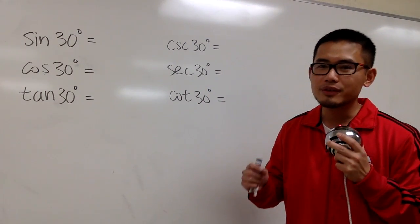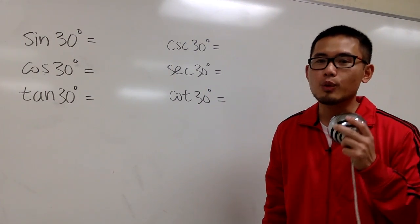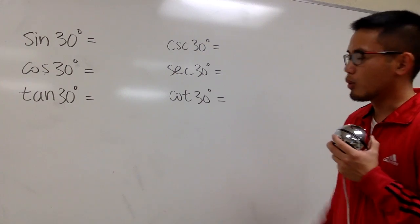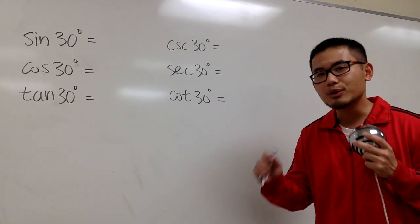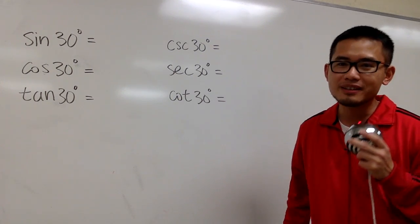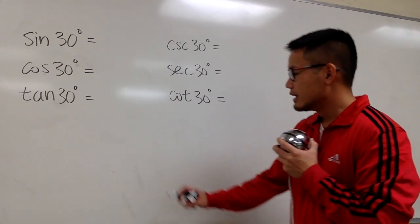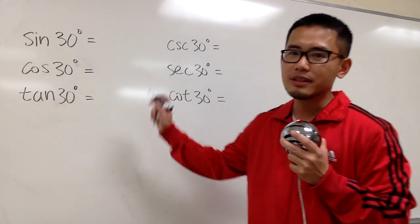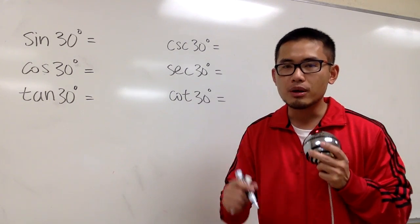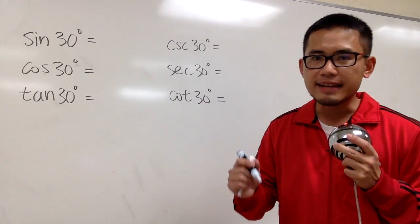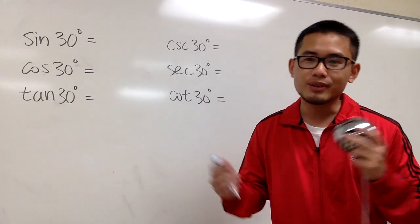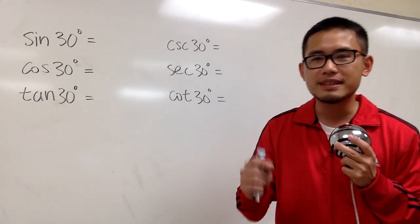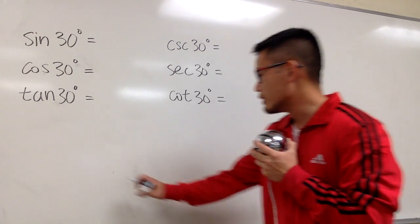We are going to figure out all the trig function values when the angle is 30 degrees. I put this on the board already, and if you want to do it without a calculator, this is how we are going to do it. The angle is 30 degrees, and we have to remember the ratio of the sides of a special right triangle — the 30-60-90 special right triangle.